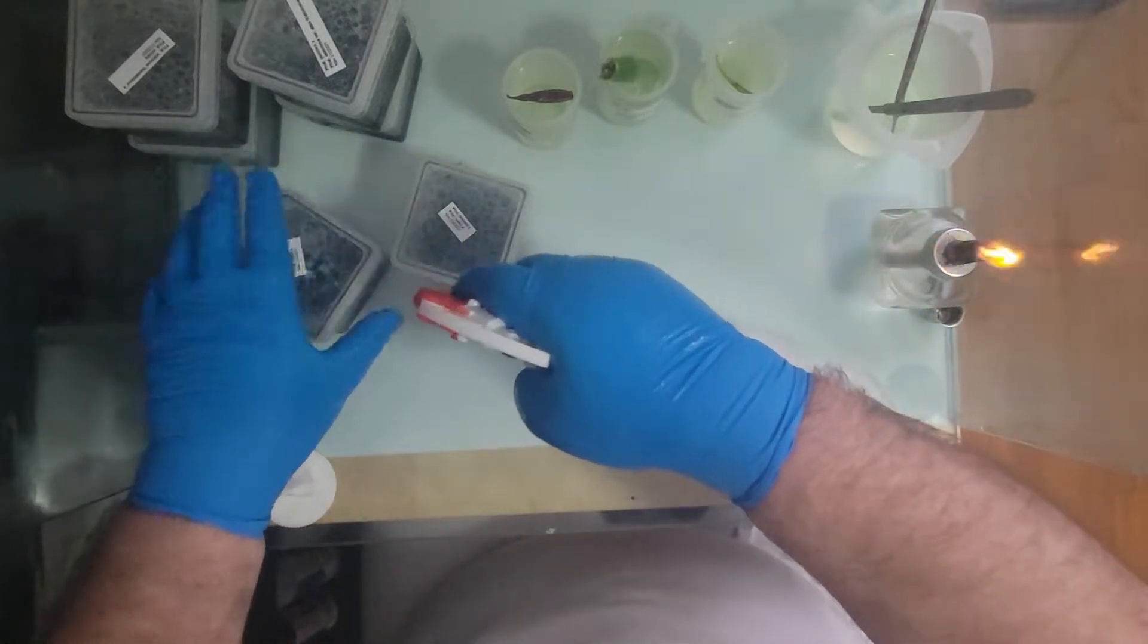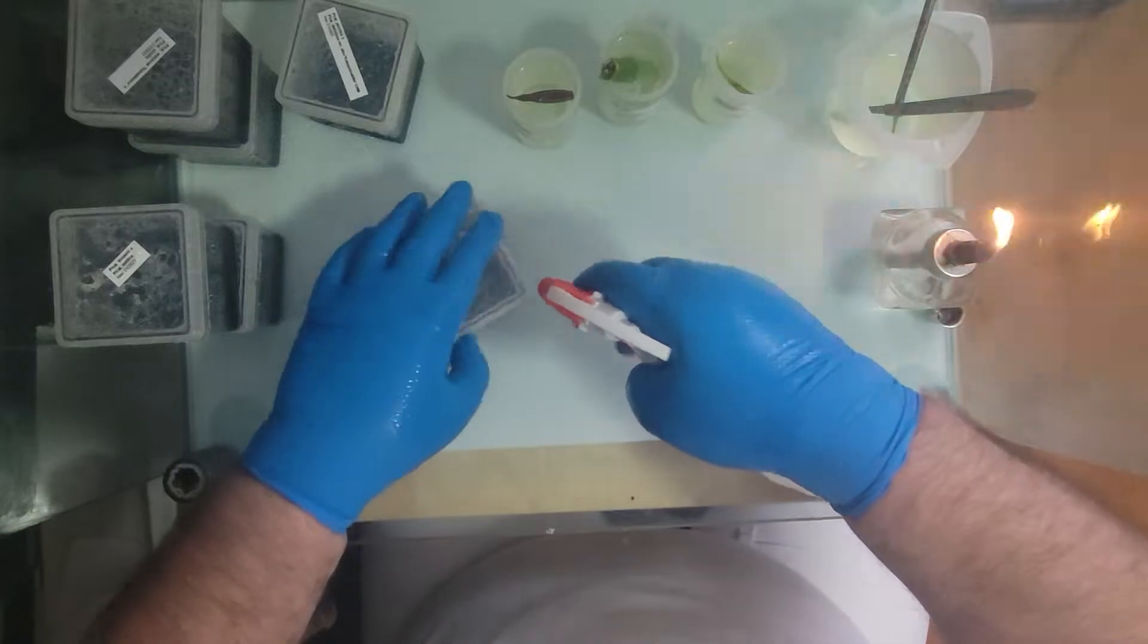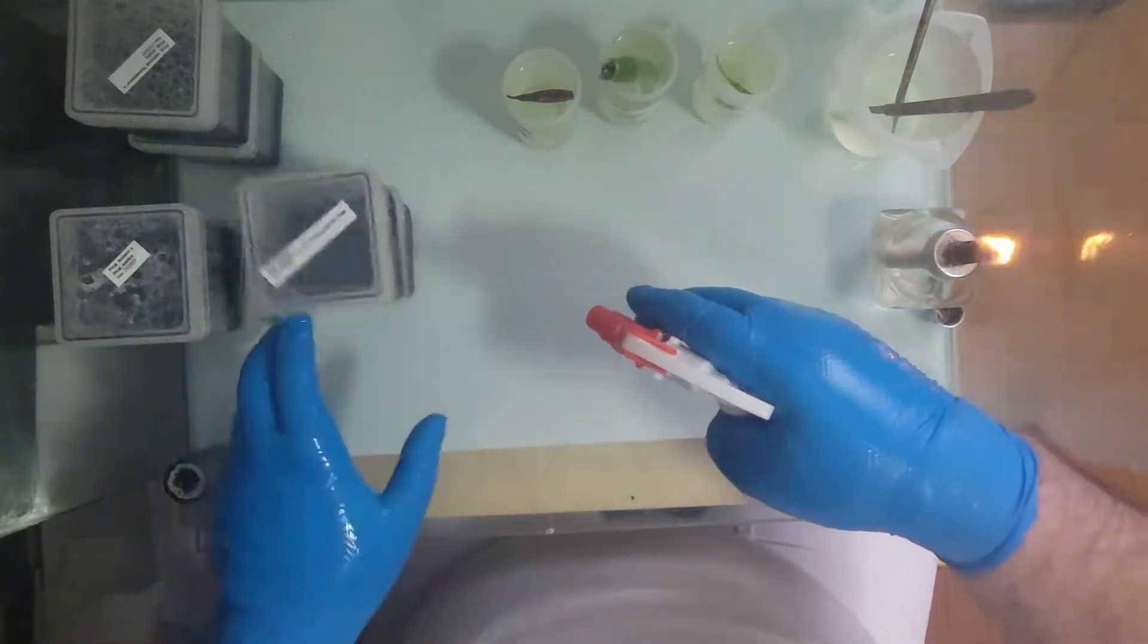First we spray the containers. I've already cleaned the laminar flow hoods. I've cleaned all this area over here. I'm just going to clean the cloth one more time.